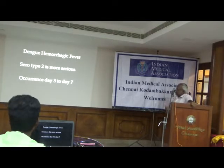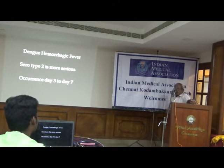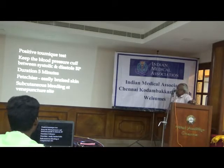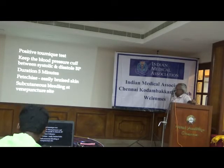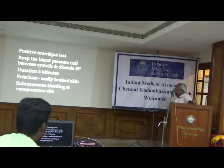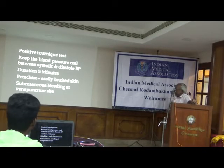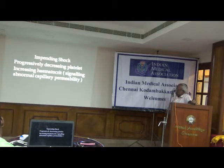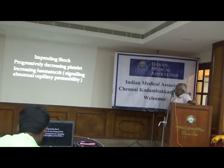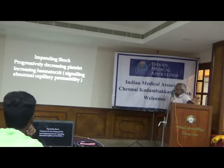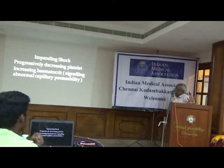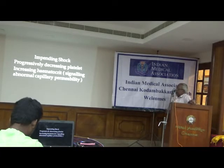Dengue hemorrhagic fever grade 3 to 4 is the most serious. Occurrence is days 3 to 7, which is why you should hospitalize the patient for at least 5 to 7 days to observe acute febrile illness. Positive tourniquet test indicates bleeding tendency — keep the blood pressure cuff between systolic and diastolic pressure for 5 minutes. Petechiae, easy bruising, spontaneous bleeding areas, and venipuncture sites indicate impending hemorrhagic state. Progressively decreasing platelet count and increasing hematocrit signal abnormal capillary permeability — these two parameters should be monitored daily in dengue fever.